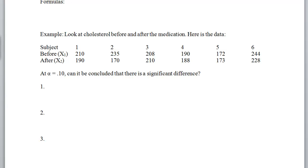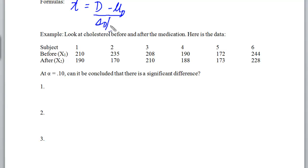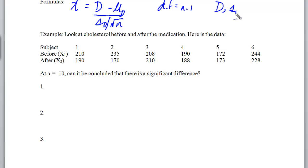The formula for finding your t-value is pretty straightforward. The t-value equals your average of the differences minus mu sub d — which is going to be zero — divided by the standard deviation of the differences divided by the square root of n. This is always zero because mu minus mu is always zero, just like in the last two sections. Don't forget your degrees of freedom are n minus one, and you can get D-bar and s sub d from the calculator.